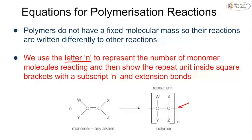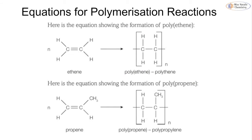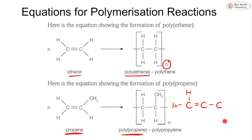If you do not show the extension bonds, you are going to lose a mark. Looking at examples: for polyethene, we have n molecules of ethene reacting to form the polymer containing n units. For polypropene, the propene monomer forms polypropene. Notice that I always draw the monomer with the carbon-carbon double bond and four groups attached, even if some are other carbons - rather than drawing propene in its standard form. We always want to have the carbon-carbon double bond and put anything else attached to it as a group.